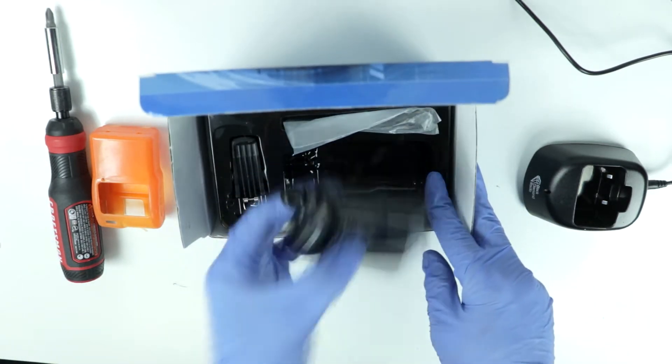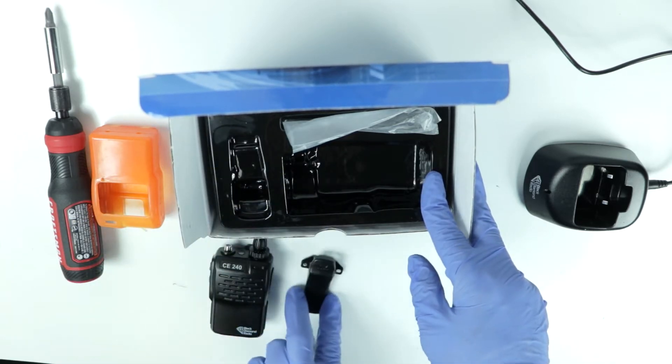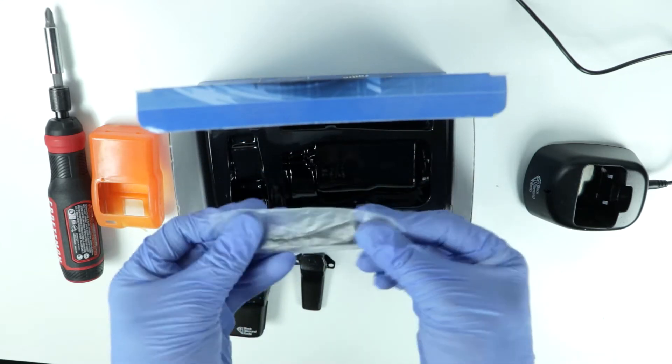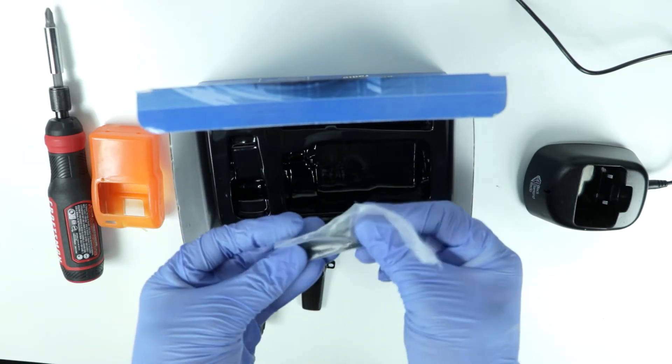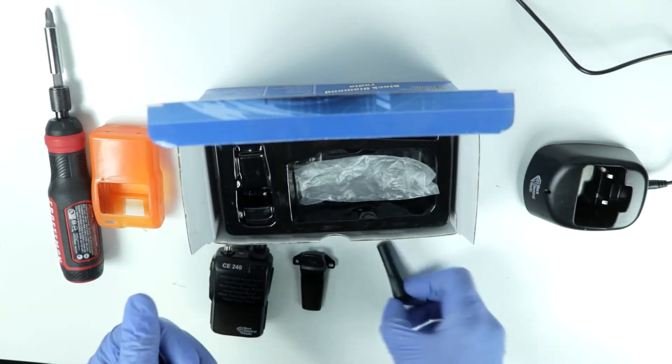Let's pull the radio out of the box. The battery is already attached to the radio. We've also got a belt clip here that attaches to the back of the radio, and in this little bag is the antenna for the radio. Let's go ahead and pull it out of the bag. It's just a little stubby antenna for your CE240.